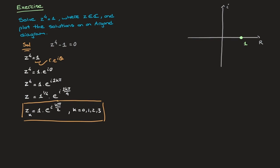Notice that k can take on 4 distinct values, because we were raising z to the power of 4. It's also worth pointing out that k takes on all integer values from 0 up to 3, where 3 is one less than the power to which we're raising z. Had I had z cubed, I would have gone up to 2; had I had z to the power of 5, I would have gone up to 4, and so on. By the end of this video, you should understand why.